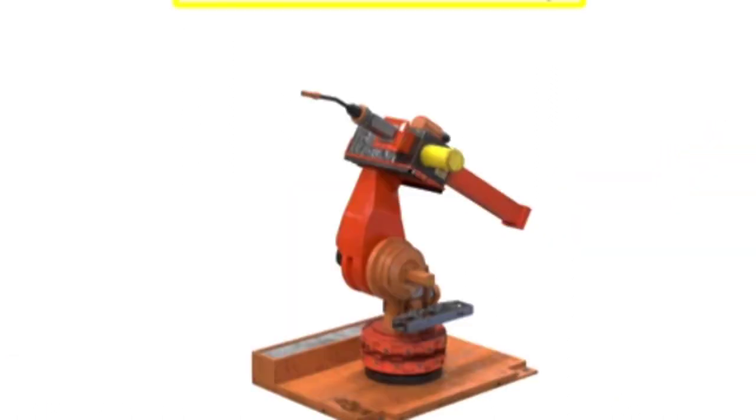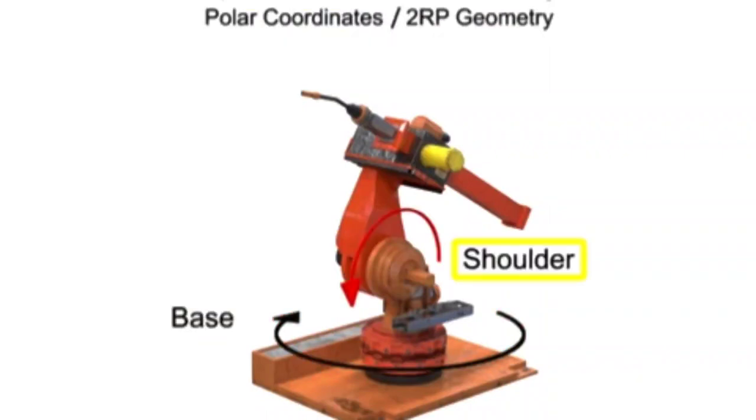Spherical arm geometry robots can rotate in two directions and move linearly in one and thus are given the designation of R2RP. The robot has base rotation, shoulder rotation, and prismatic or linear motion at the arm.